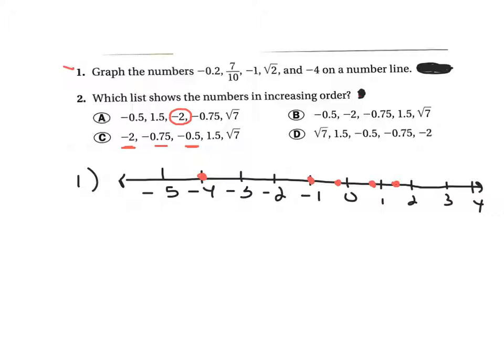Negative a half. And then it jumps to positive one and a half. And the square root of seven is like two point something. So that's definitely the biggest. So the answer is definitely C there.